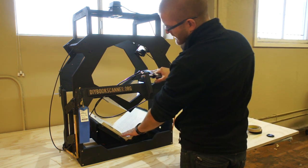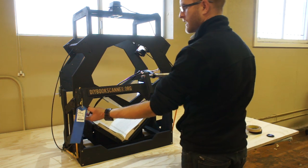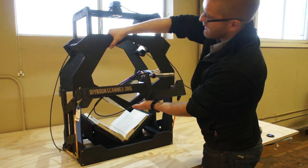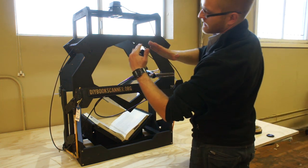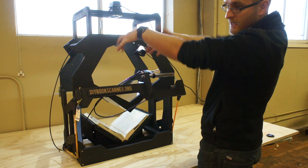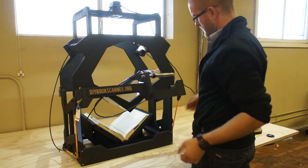The design of this scanner is such that this whole top piece can be removed, flipped over, and the bottom of the glass V becomes a roof where you can lay your paperback book and scan at a high rate of speed.